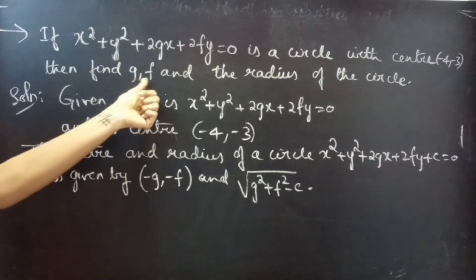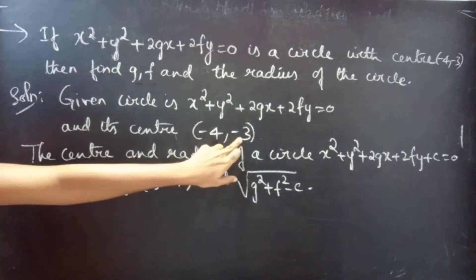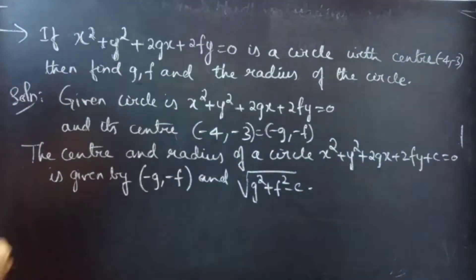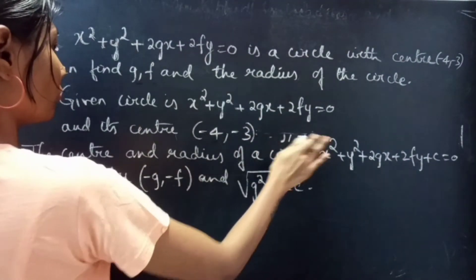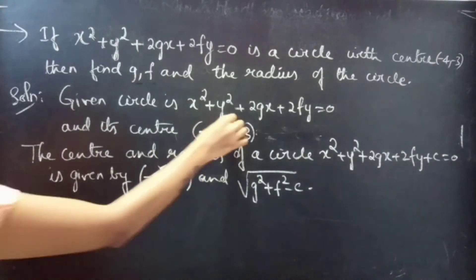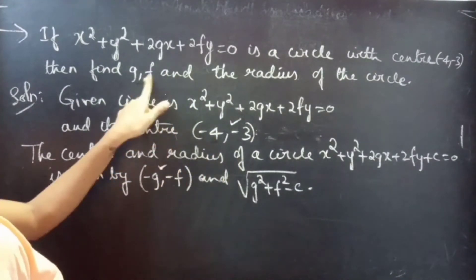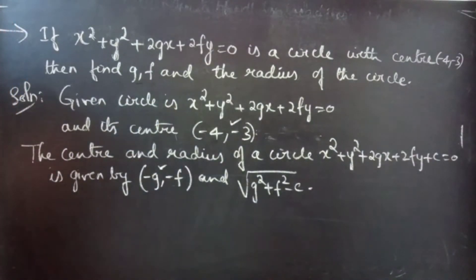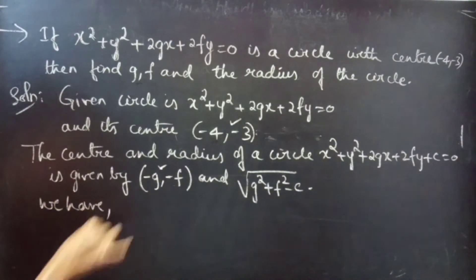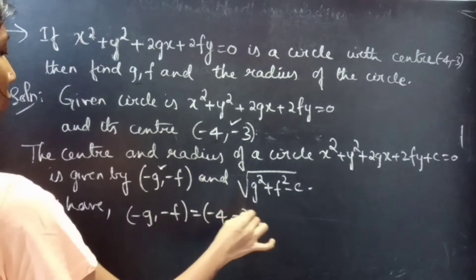Here we are asked to find g and f values. We are given the center ordered pair (minus 4, minus 3), which means we are given the (minus g, minus f) values. Using the center we will find the values of g and f. From the hypothesis we have: minus g comma minus f equals to minus 4 comma minus 3.